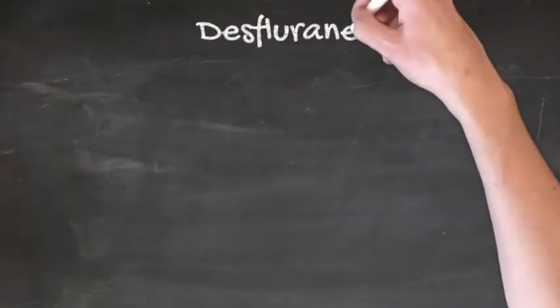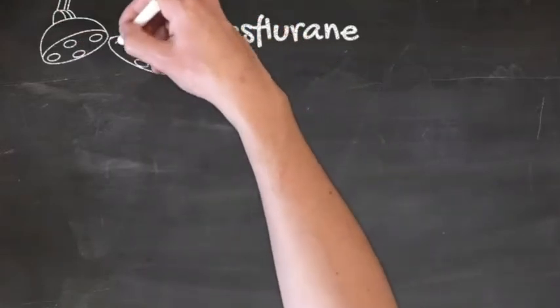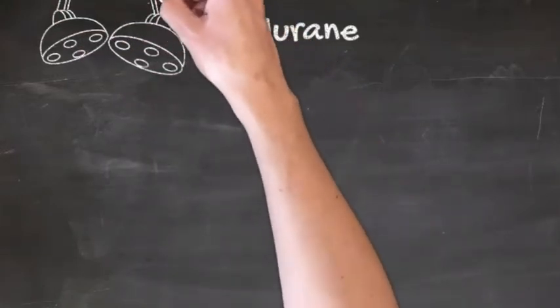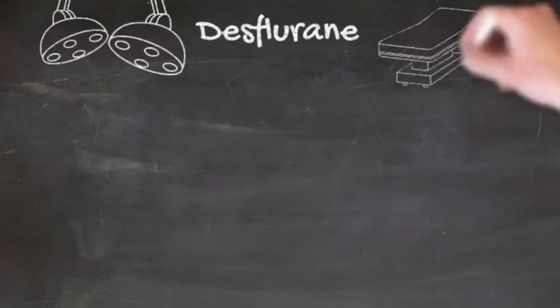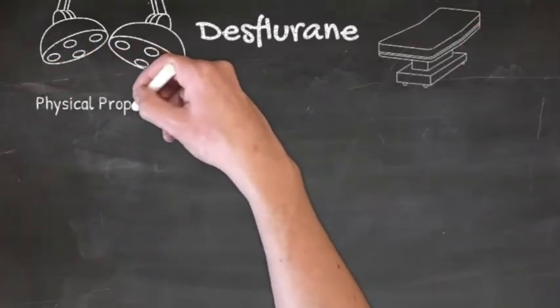One of the first things you'll probably note about desflurane is that its vaporiser is different to the others, and that is because desflurane's physical properties mean that it needs to be pressurised and heated in a TEC6 vaporiser in order to be safely delivered to the patient.